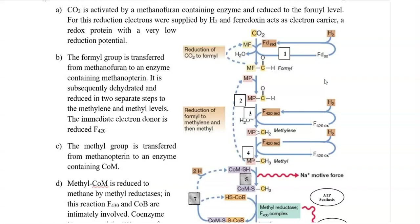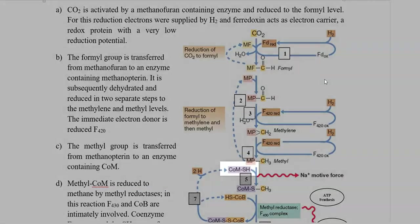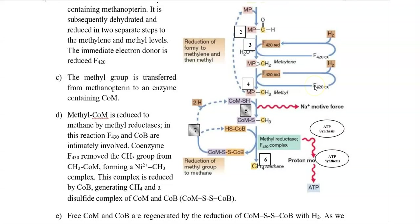Finally, the methyl group is transferred from methanopterin to an enzyme called coenzyme-M. So, the methyl-containing coenzyme is reduced to methane with the help of methyl reductases. In this particular process, coenzyme F430 as well as coenzyme-B are involved.